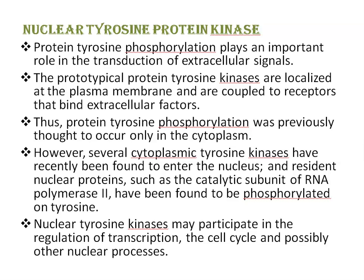Nuclear tyrosine protein kinases: protein tyrosine phosphorylation plays an important role in transduction of extracellular signals. Prototypical protein tyrosine kinases are localized at the plasma membrane and coupled to receptors that bind extracellular factors. However, several cytoplasmic tyrosine kinases have recently been found to enter the nucleus, and nuclear proteins such as the catalytic subunit of RNA polymerase II have been found to be phosphorylated on tyrosine. Nuclear tyrosine kinases may participate in regulation of transcription, the cell cycle, and other nuclear processes.